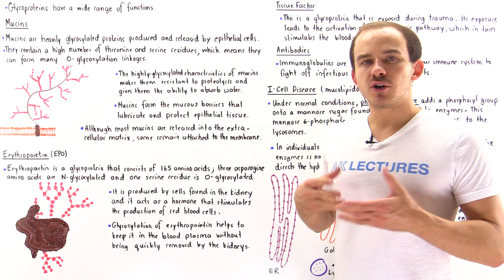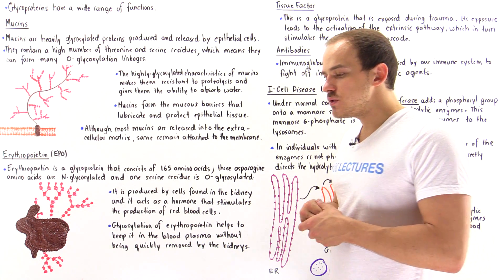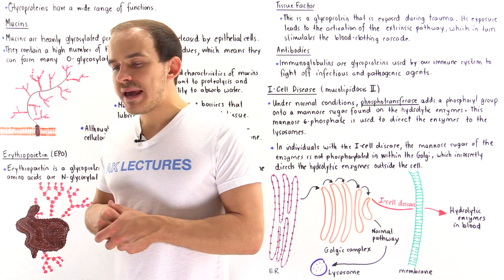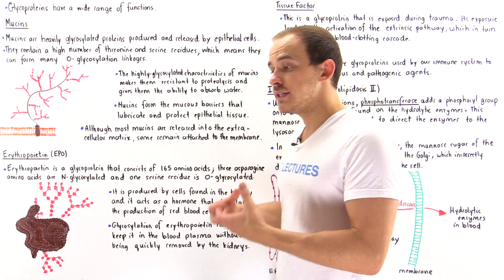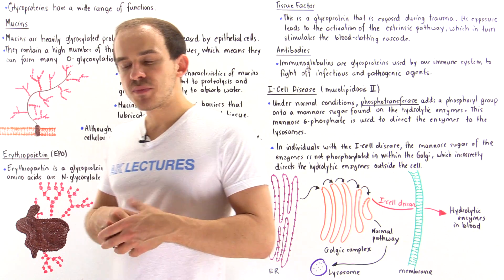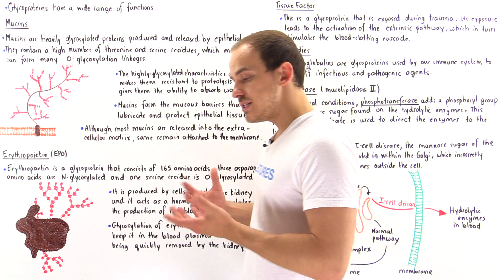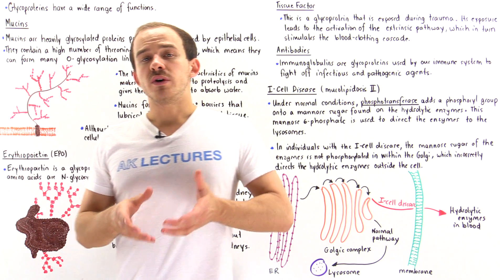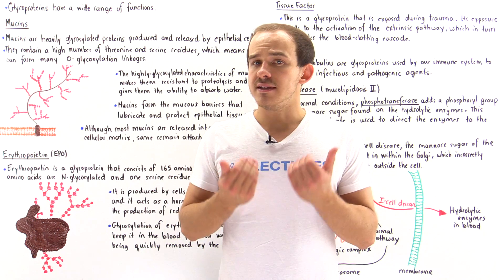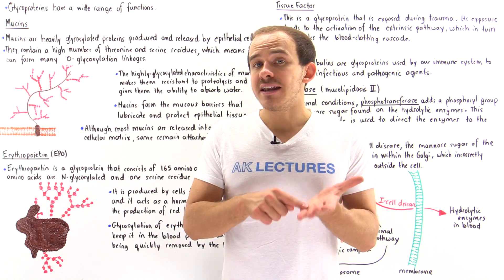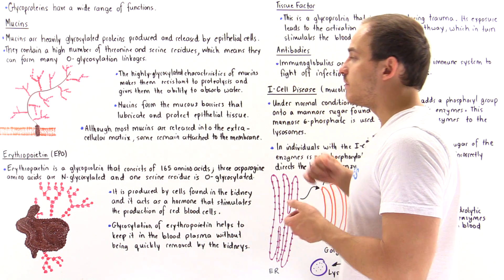Let's continue our discussion on glycoproteins and the process of protein glycosylation. When we modify proteins by adding carbohydrates to them, we basically change their properties and modify their functions to give them the ability to carry out certain processes. Inside our body we have many different types of glycoproteins, and in this lecture I'd like to focus on several important glycoproteins and see how adding the sugar component gives the protein the ability to carry out specific processes.